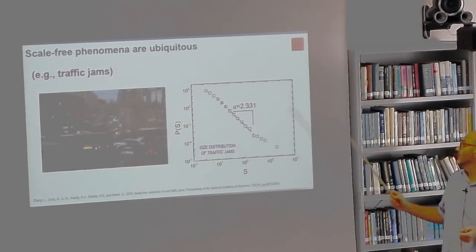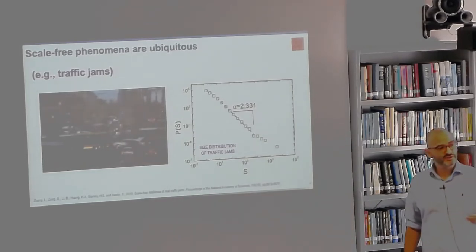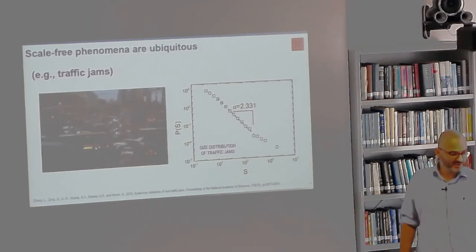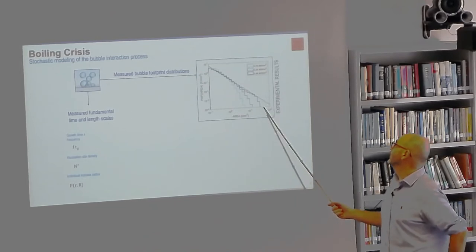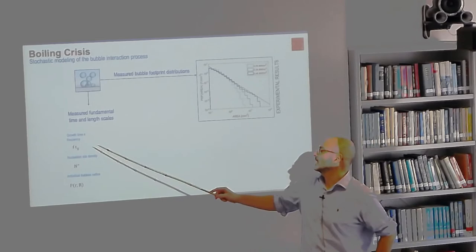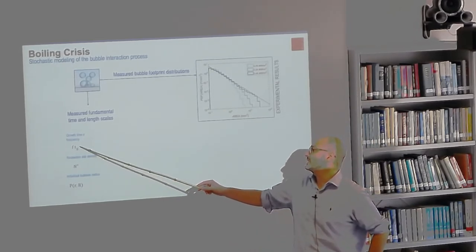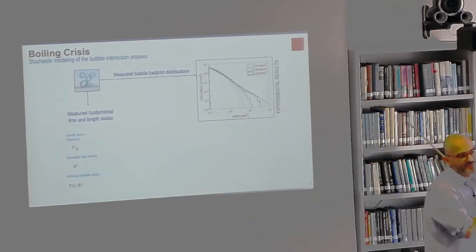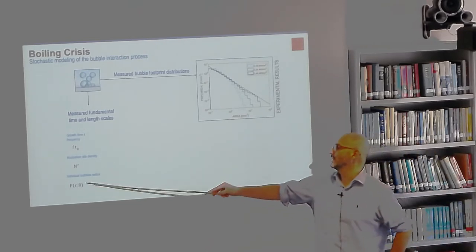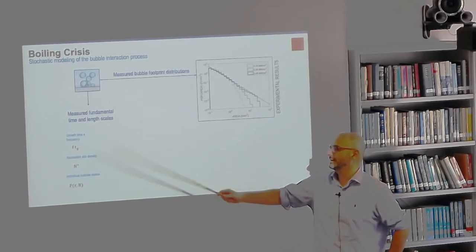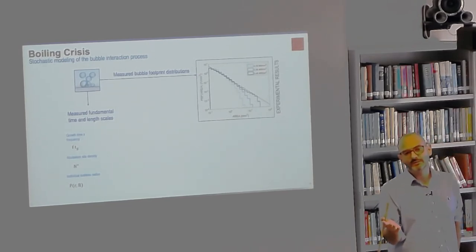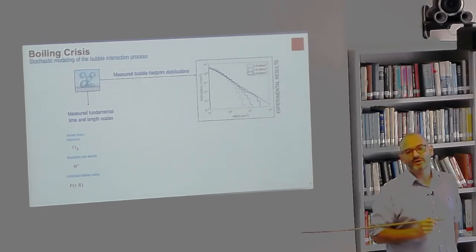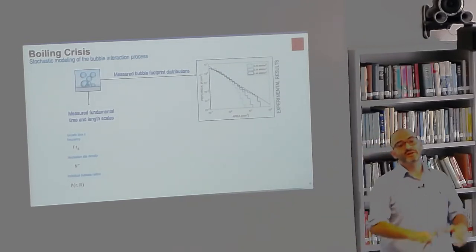Experimentally we can measure bubble footprint distributions. We have the mean FTG product, which expresses the probability of having a bubble nucleating at a given site at a certain time. We have the nucleation site density and the scale size of individual non-interacting bubbles. So essentially we have four scales: two length scales — N-double-prime and R — and two time scales — F and T_G. Three are related to a single bubble; the fourth, N-double-prime, is related to the number of bubbles on the surface.